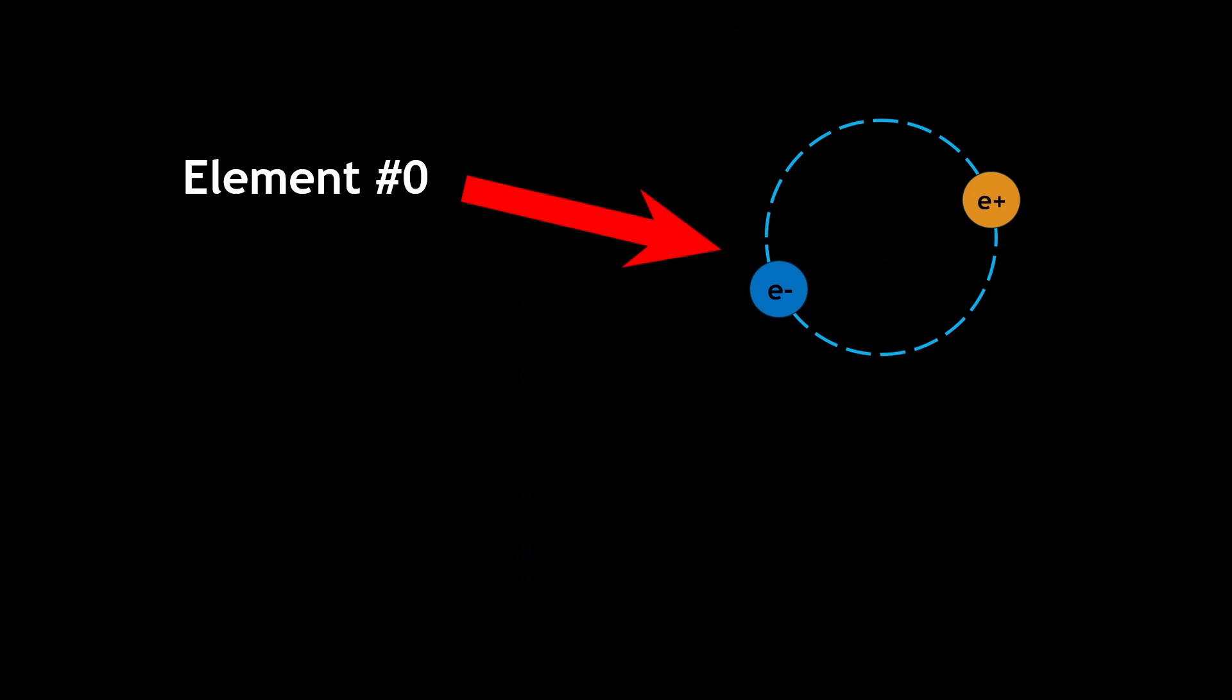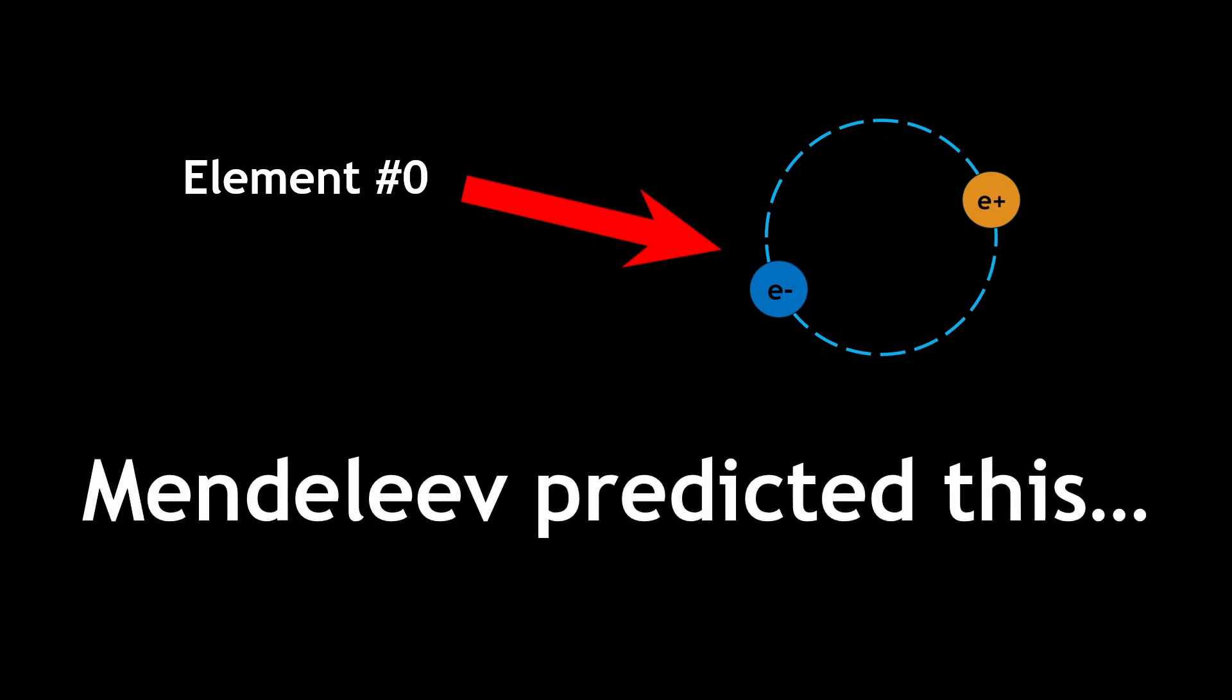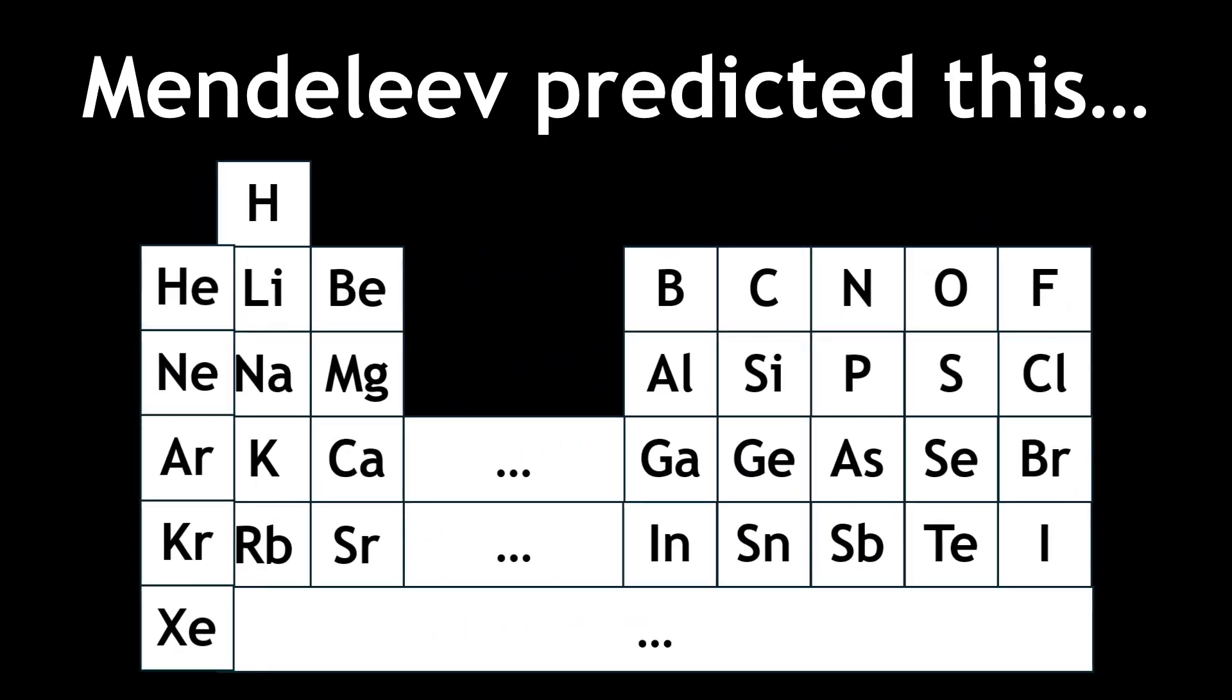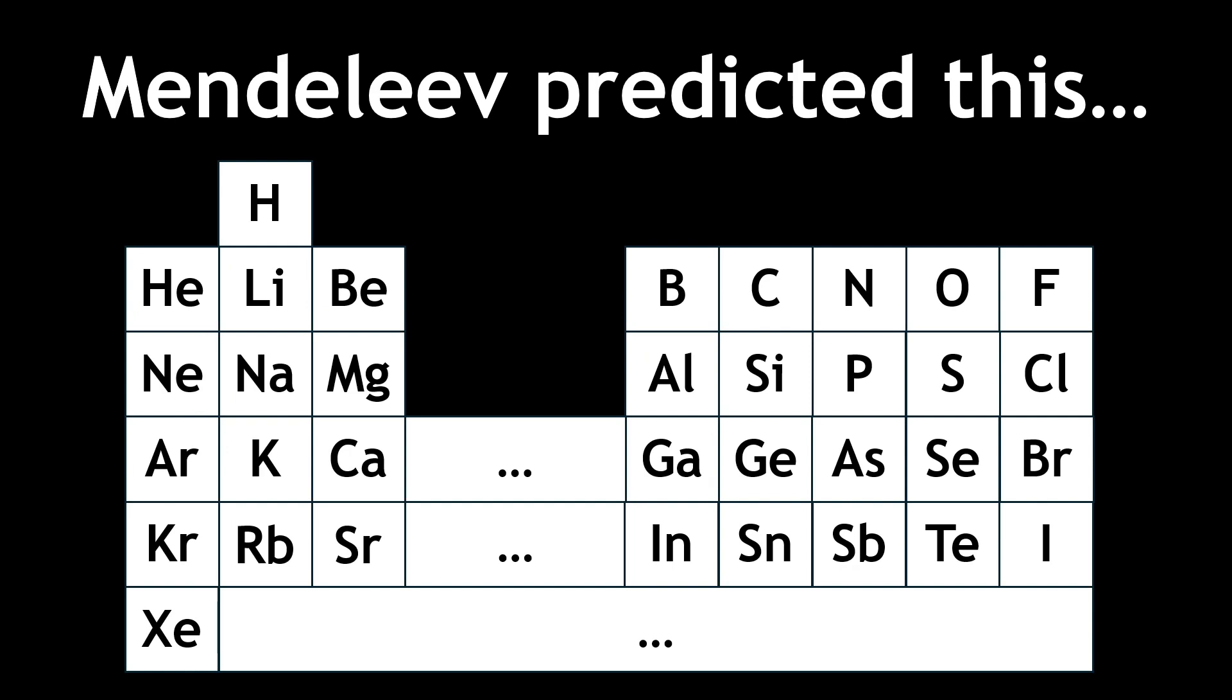But what if I told you that Mendeleev may have predicted that there would be an element before hydrogen, long before positronium was discovered? Unlike the modern design of the periodic table, Mendeleev placed the noble gases on the far left of the table, which left a square to the left of hydrogen that remained unfilled.